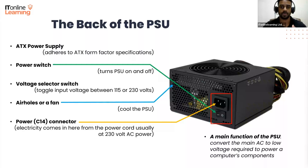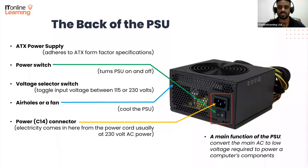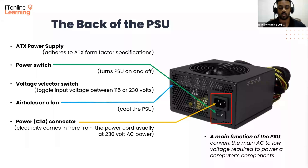On the back panel of all power supplies is a power connector — more technically, a C14 connector — located right here. This is where the power cord from the wall plugs in. The electricity coming in from that cord is AC power, typically 230 volts, though the voltage depends on your region. The components inside a computer use DC power, so the AC power from the outlet needs to be converted. This is one of the main functions of a power supply: to convert mains AC to low-voltage regulated DC power.